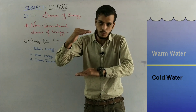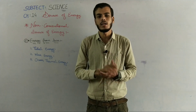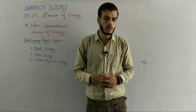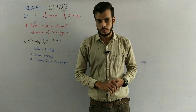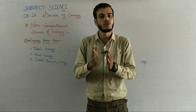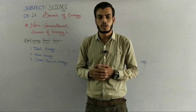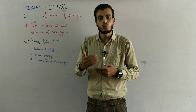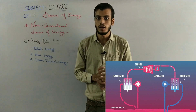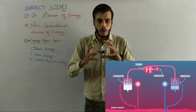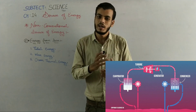तो यह दोनों layers के बीच में जो heat का difference produce हुआ, इसका use करके हमें electricity produce करनी है। इसके लिए हमें ammonia जैसे volatile substance की requirement रहेगी। Volatile substances ऐसे होते हैं जो lower temperature पे boil होने लगते हैं - for example ammonia, जो approximately 50 degree Celsius पे boil होना start कर देगा। जब ammonia boil होगा तो vapor generate होगी, और vapor के अंदर kinetic energy होती है जो turbine को rotate करेगी और electricity generate होगी।